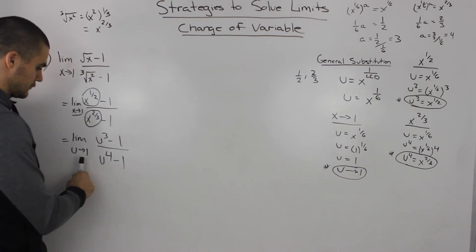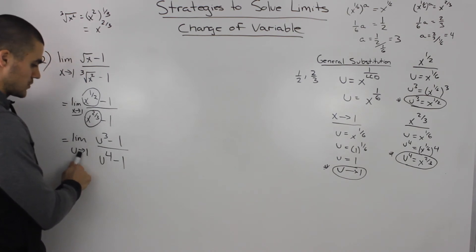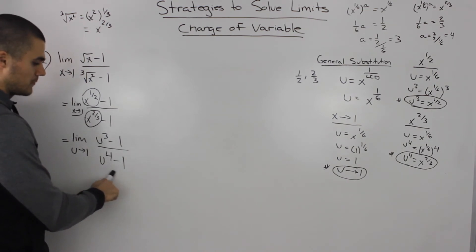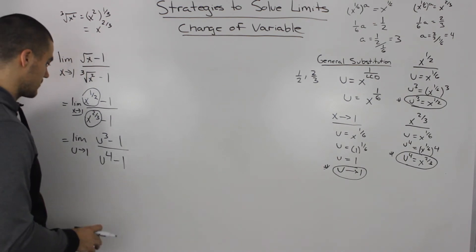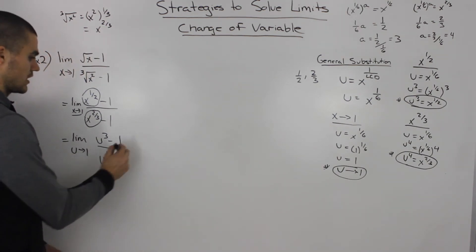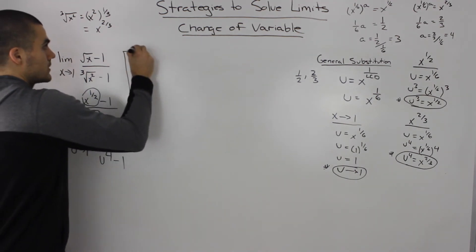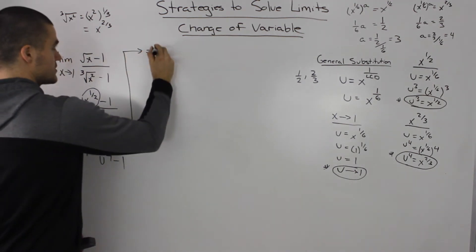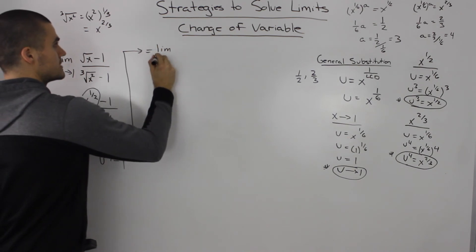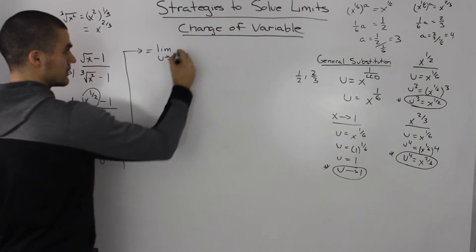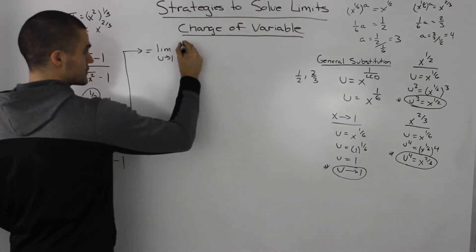We have a new limit — first thing we check: can we make a direct substitution? Well, as u goes to 1, u^4 will be 1 and then 1 minus 1 is 0, so we still can't make a direct substitution, but this is a lot easier to work with. So continuing with this limit as u goes to 1: u cubed minus 1 is a difference of cubes.